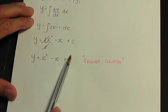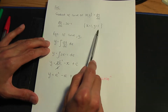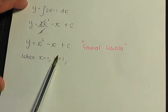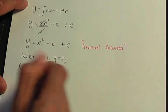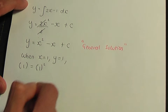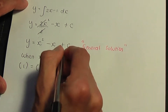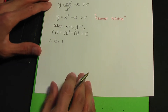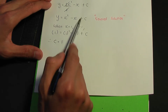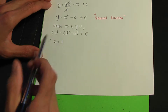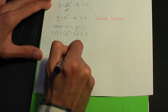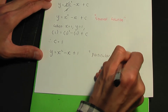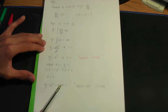Now we need to calculate the value of constant c using the given values. When x equals 1, y equals 1. Substituting into the general solution: 1 equals 1 squared minus 1 plus c. Simplifying, c equals 1. Replacing c in the general solution gives us y equals x squared minus x plus 1. This is the particular solution — the equation of the curve for example 2.